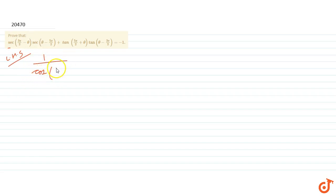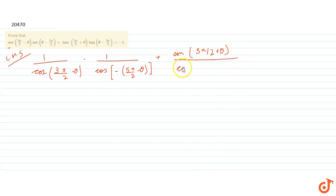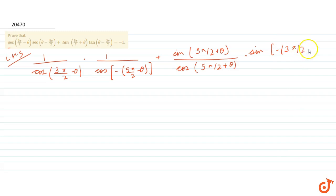sec(3π/2 - θ) can be written as 1 by cos(3π/2 - θ), and sec(θ - π/2) can be written as 1 by cos(-(5π/2 - θ)). tan can be written as sin by cos, so this will be sin(5π/2 + θ) divided by cos(5π/2 + θ), multiplied by sin(-(3π/2 - θ)) divided by cos(-(3π/2 - θ)).